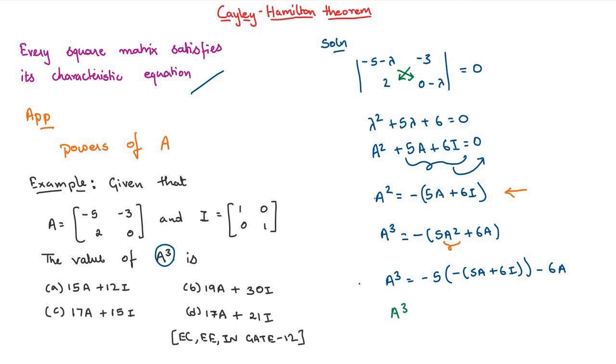Simplifying this, we get A cube is equal to 19A plus 30I. So, here we found the third power of A using Cayley-Hamilton theorem.